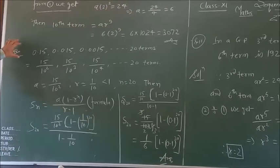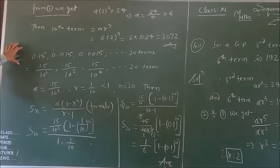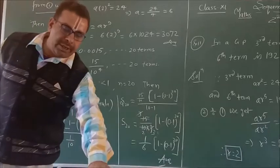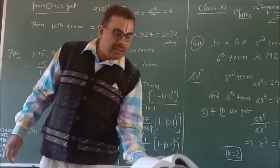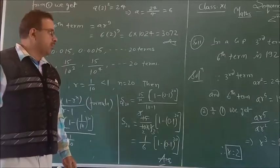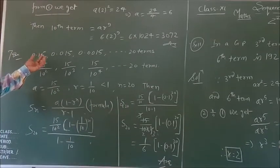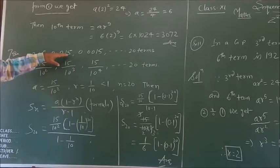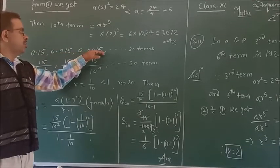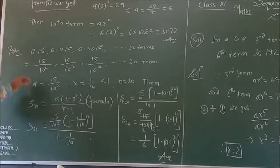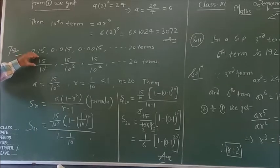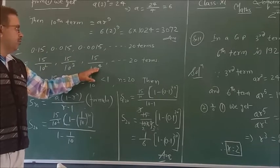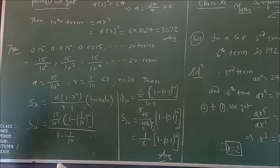Now, one question related to finding the sum of GP terms. Question 7 in Exercise 9.3 related to geometric progression: find the sum of 20 terms of the series 0.15, 0.015, 0.0015, ... up to 20 terms.